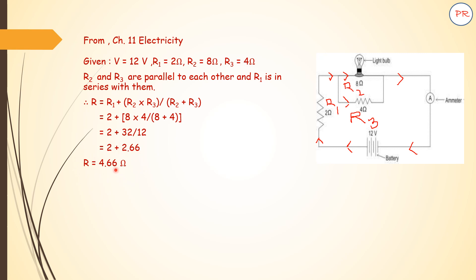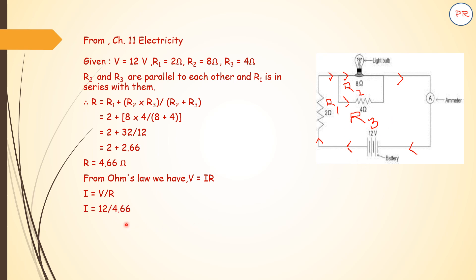Next step is to apply Ohm's law. V = IR, so I = V/R. Here V = 12 volts and R = 4.66 ohms. So I = 12 / 4.66 = 2.58 amperes. So the current flowing through the ammeter will be 2.58 amperes.